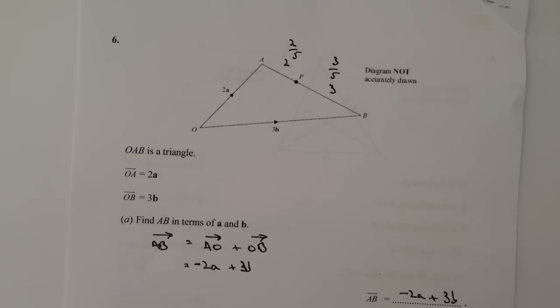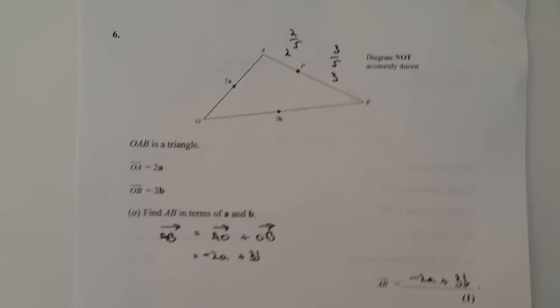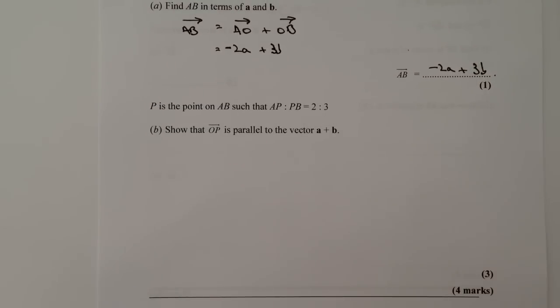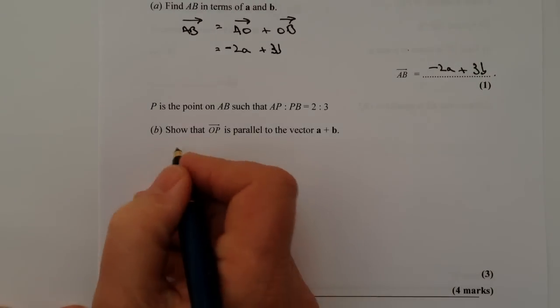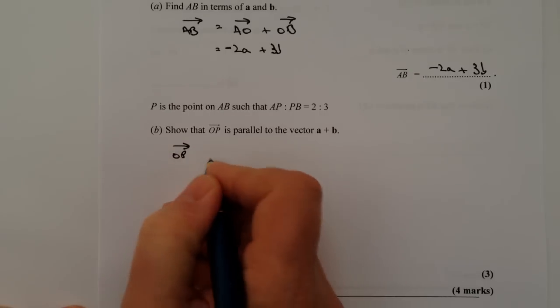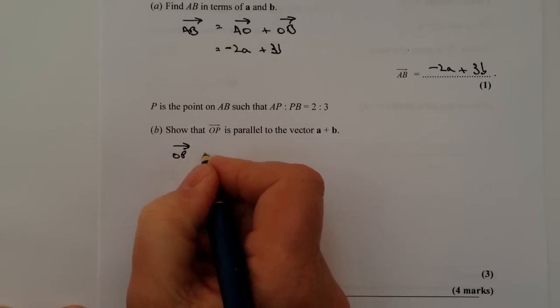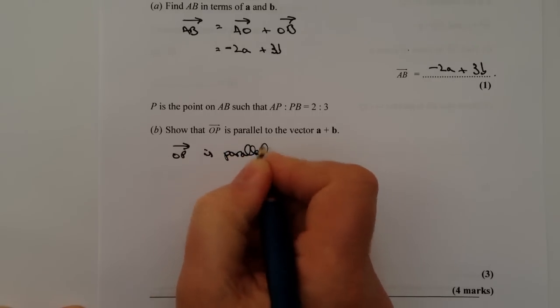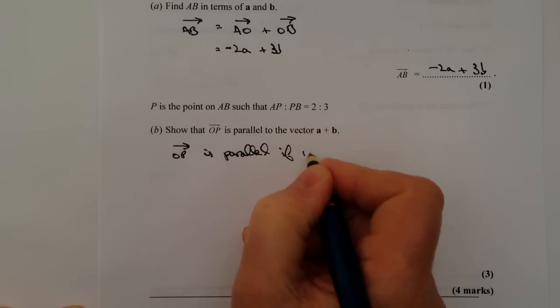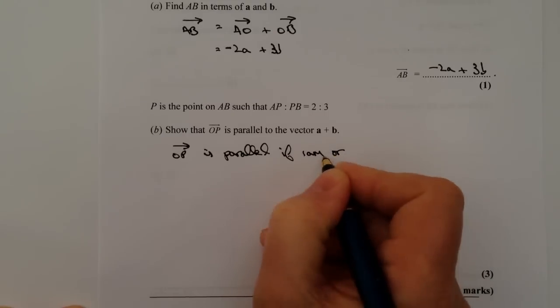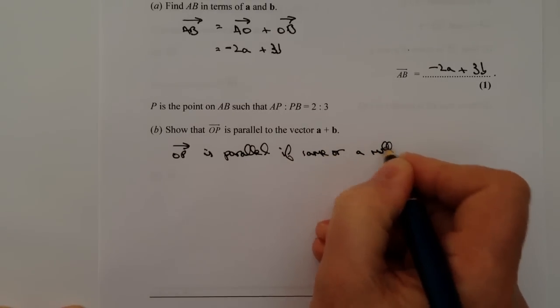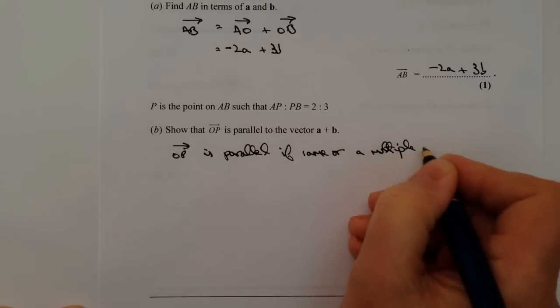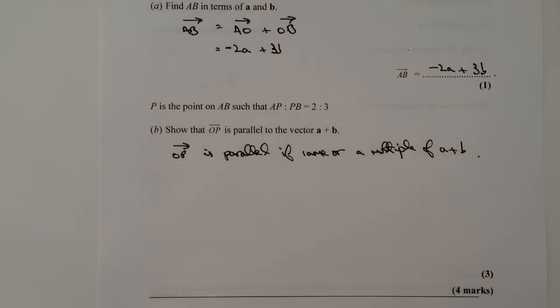OK, so we're going to show that OP is parallel to the vector a plus b. Well, in order to show that OP is parallel to the vector a plus b, we need to show that vector OP is parallel if it's a multiple or the same. So if it's the same or a multiple of a plus b.